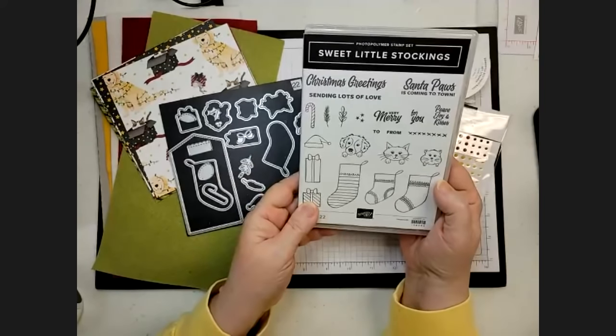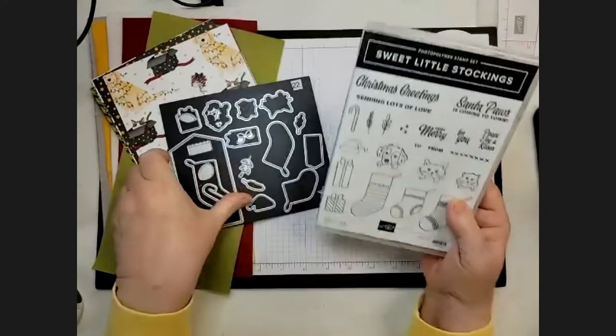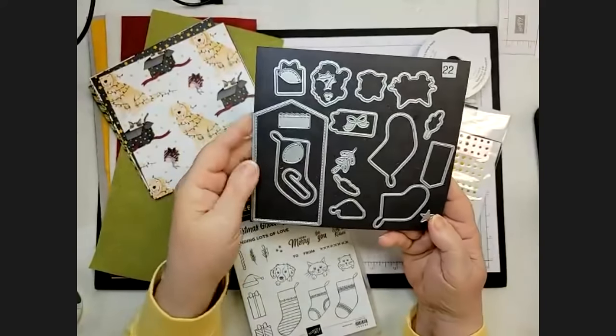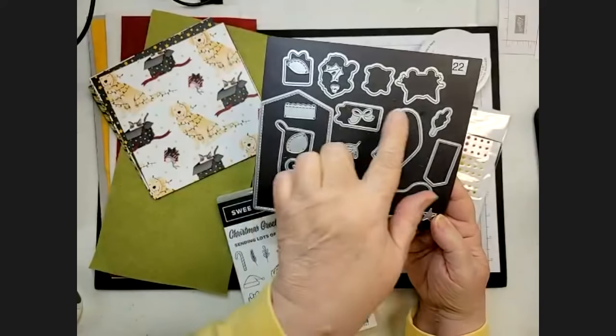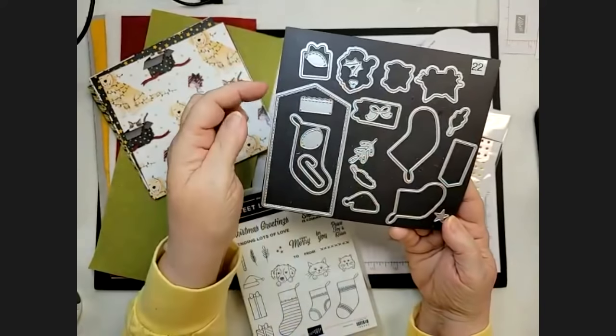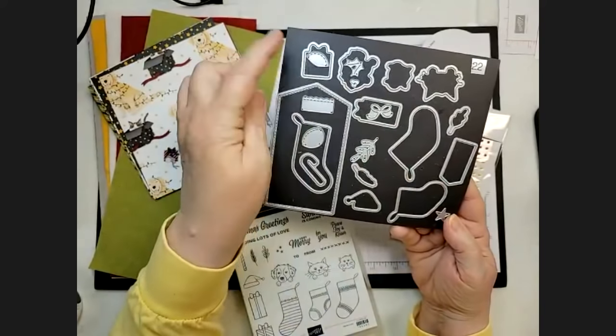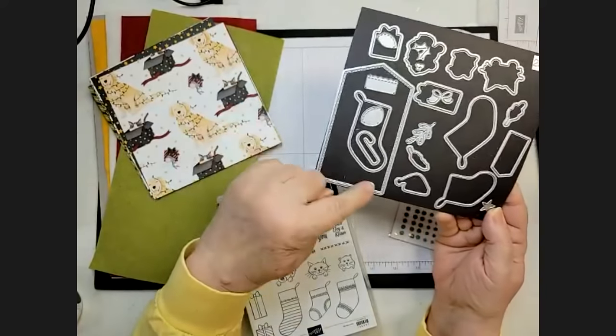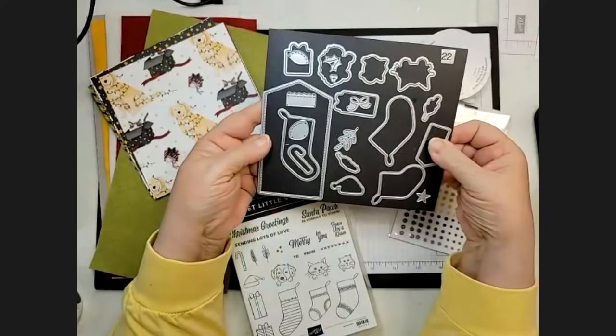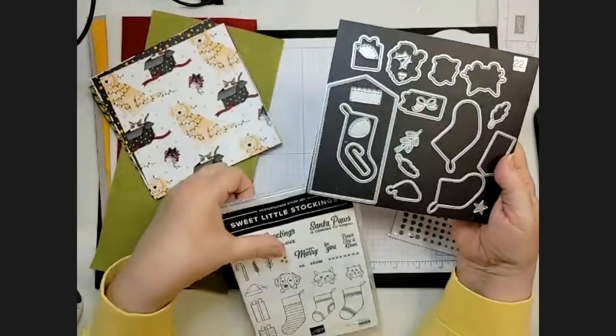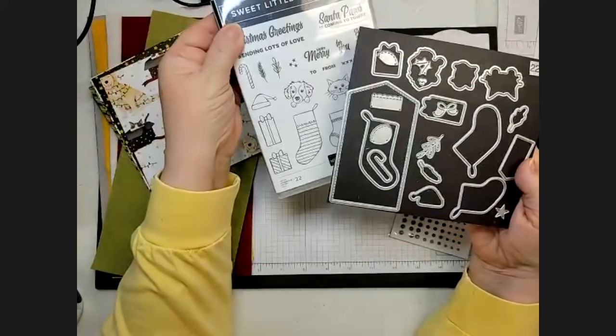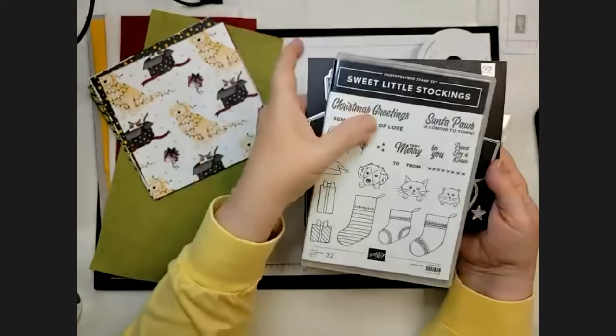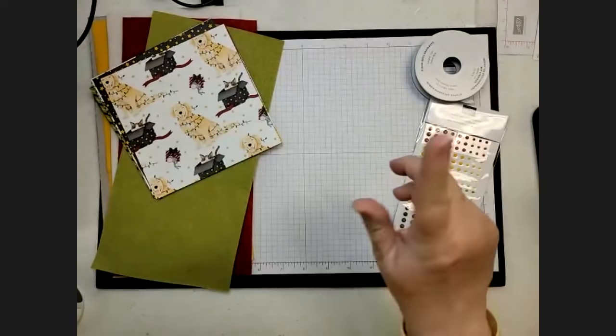This is the photopolymer clear stamp set. And then the die, there's 22 dies to this. So there's the three different size stockings. There's dies for the faces. There's even like the heel and the toe of the stockings, star. I mean, there's just all kinds of fun and a couple of tags. Oh, this is a really nice big one. There's stitched rectangles. This little guy isn't stitched. There's even a couple of presents because there's a couple of presents on the stamp set. And so you can die cut those out as well. So, but that's not all.